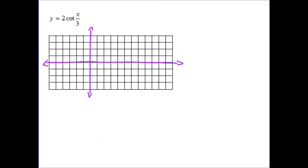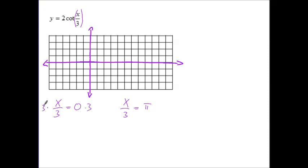Let's move on to our next example: y is equal to 2 times the cotangent of x over 3. Our bx minus c is again this expression, but now we have a cotangent, so the equations are different. For the cotangent, we have x over 3 is equal to 0 and x over 3 is equal to pi. Multiplying both sides by 3, we get x is equal to 0 and x is equal to 3 pi. Those are our first two asymptotes.